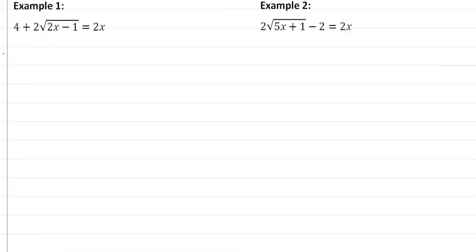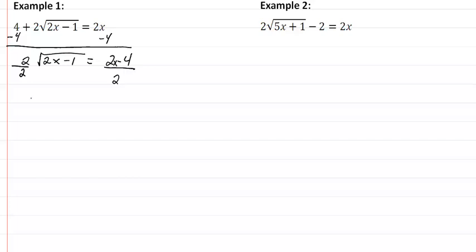So in our first example here, first thing we want to do is start on the side with a radical, add the opposite to our number here. So we're going to get 2 square root of 2x minus 1, equal to 2x minus 4. Divide by the number in front of our radical. And so we're going to get now the radical of 2x minus 1, equal to x minus 2.